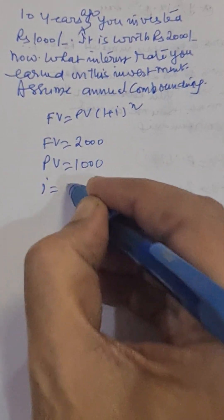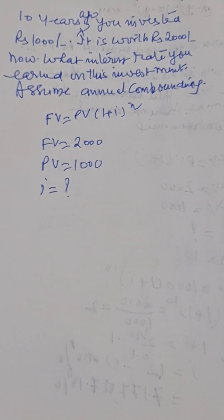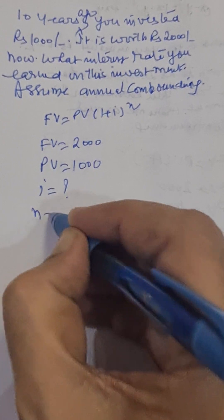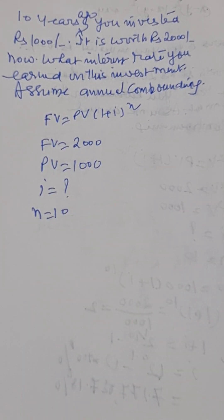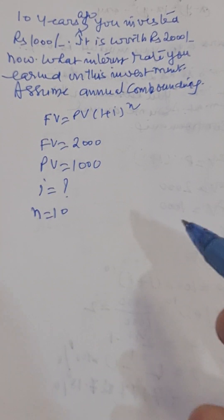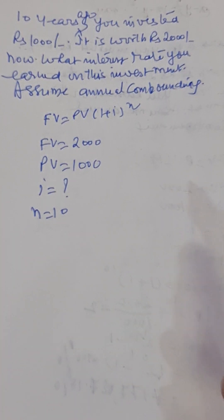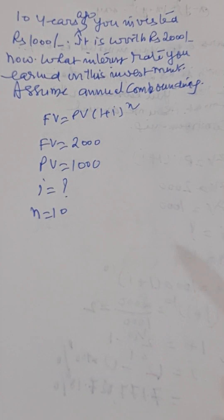I is to be calculated, that is what rate of interest this investment earned. N is ten here because there is to be annual compounding and there are ten years for this investment.